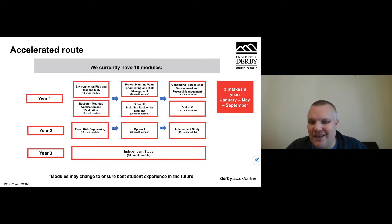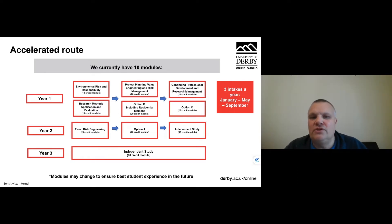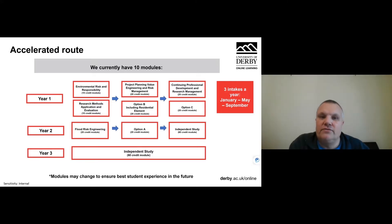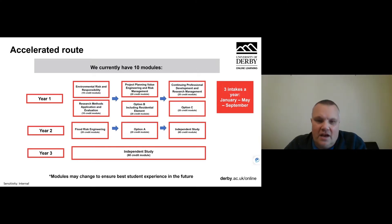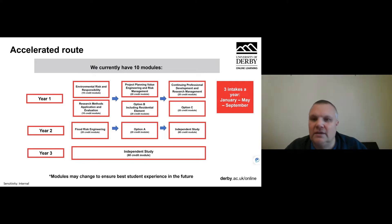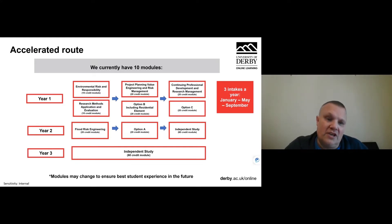There is also an accelerated route where some students opt to do 40 credits per semester rather than the standard amount. We generally require students who want the accelerated route to start on the standard route and do the two 10-credit modules first, then look at how they're performing and managing their time. If everything is in place and they've got the time, we can then accelerate them to 40 credits online per trimester, pulling everything closer together.